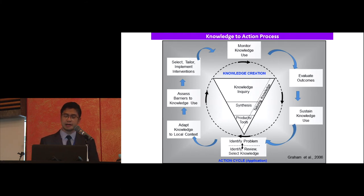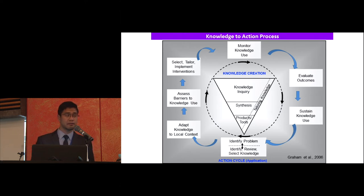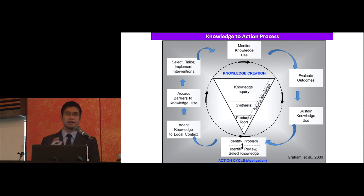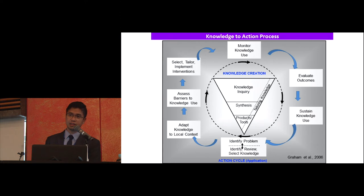The second framework is the Knowledge to Action cycle, or KTA cycle, developed by Graham in 2006. It depicts the whole process from knowledge creation — identifying the problem, coming up with the intervention, tailoring it to suit the local context, refining it if necessary, evaluating it, and taking strategies to sustain knowledge use.